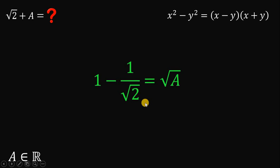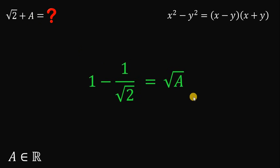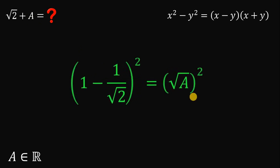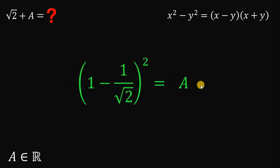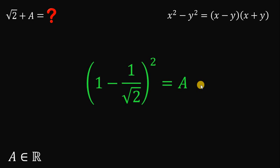Our goal is to find the value of square root of 2 plus a. We have a and we have square root of a, so to get a, let's square both sides. On the right-hand side, square root of a, quantity squared, is just a. And on the left side, we have 1 minus 1 over square root of 2, quantity squared.